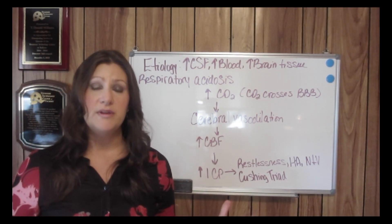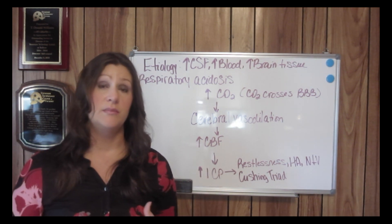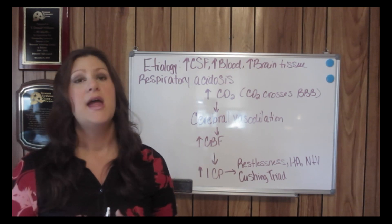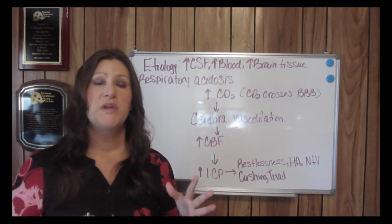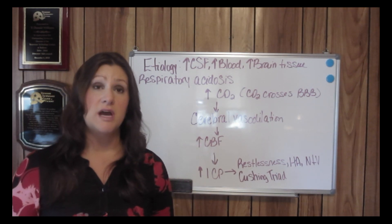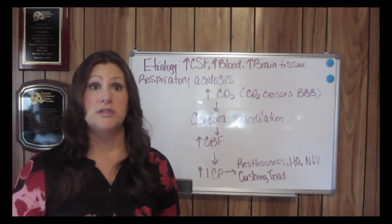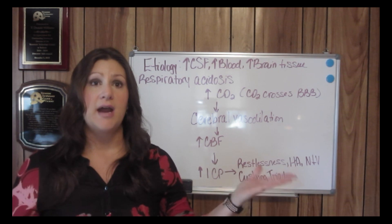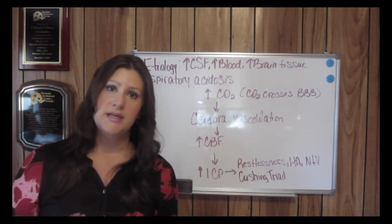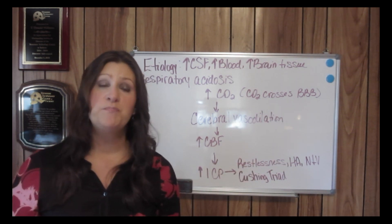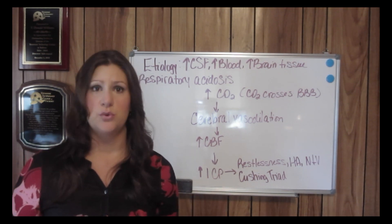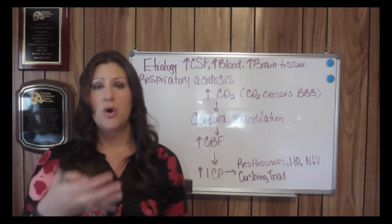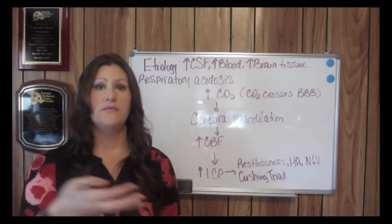The most unique sign or symptom of increased ICP is Cushing's Triad. This is an increase in systolic blood pressure to 180-200, a decrease in heart rate, and a decrease in respiratory rate. Let's break apart each part of the Triad.